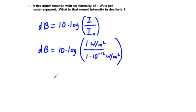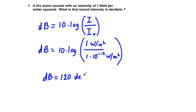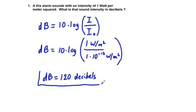So dB equals 120 decibels. That's our answer to problem number 1.